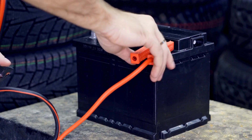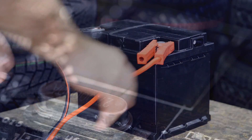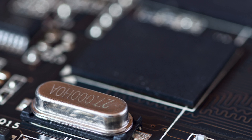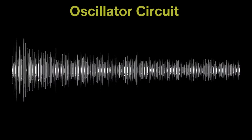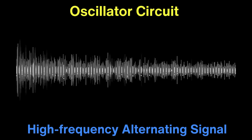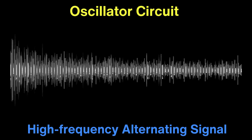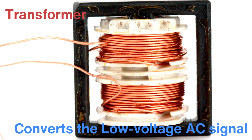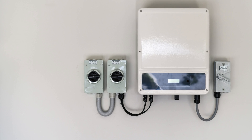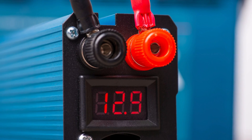At its core, a voltage inverter works by taking a DC input and rapidly switching its polarity back and forth, creating an oscillating current. This process begins when the DC input is fed into an oscillator circuit, which generates a rapidly fluctuating signal by toggling the polarity at set intervals. Next, the signal is passed through a transformer, which converts the low-voltage AC signal into the desired output voltage. For instance, the transformer will step up the voltage from a low level, such as 12 volts from a car battery, to the 120 volts or 230 volts used by most appliances.